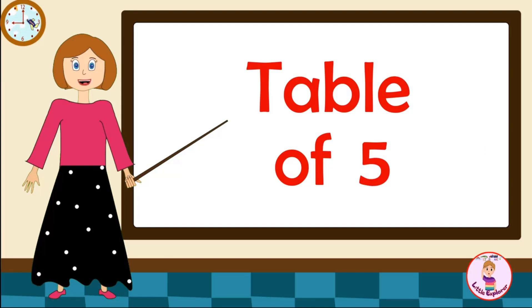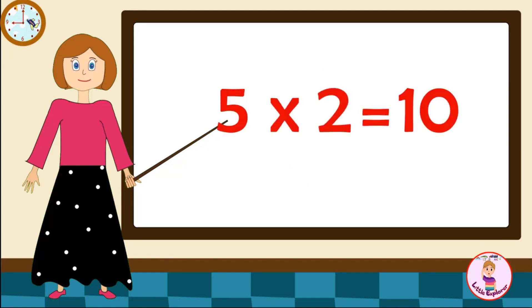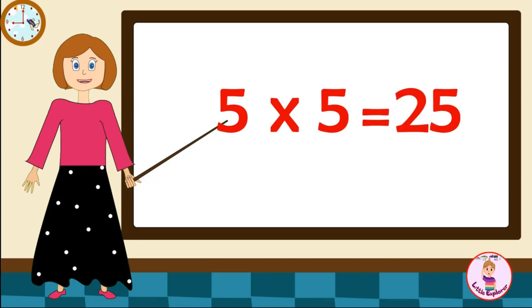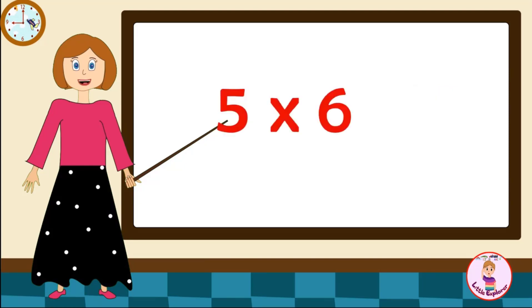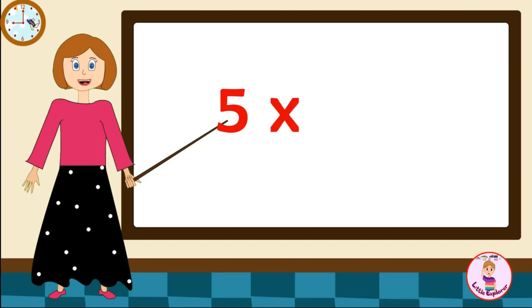Table of Five. Five-one's are five. Five-two's are ten. Five-three's are fifteen. Five-four's are twenty. Five-five's are twenty-five. Five-six's are thirty. Five-seven's are thirty-five. Five-eight's are forty. Five-nine's are forty-five. Five-ten's are fifty.